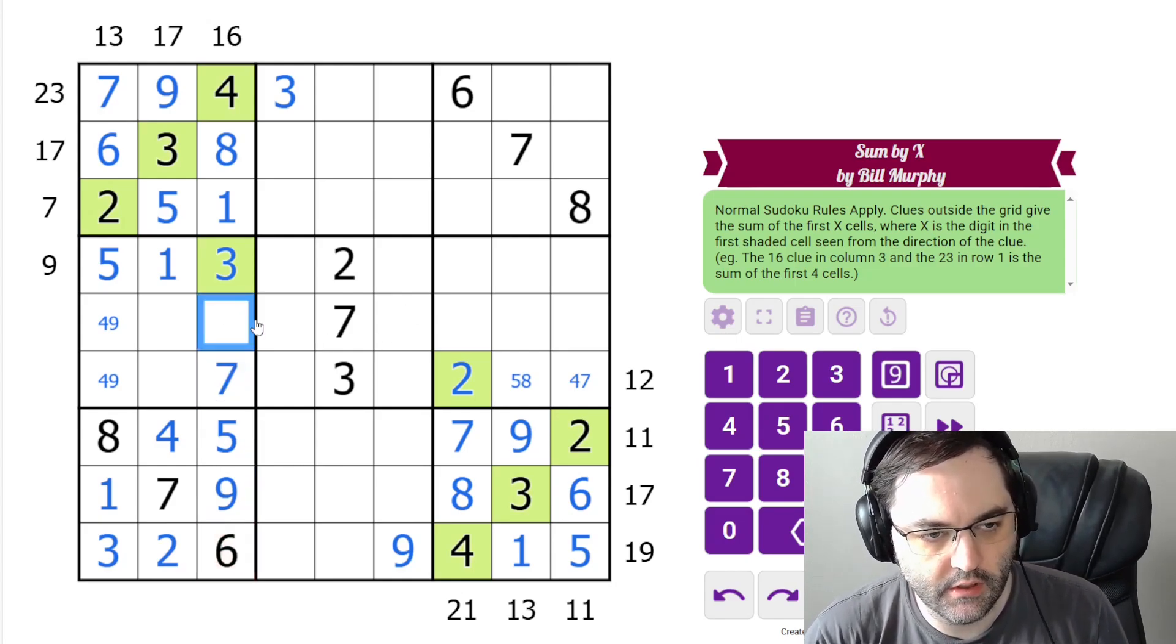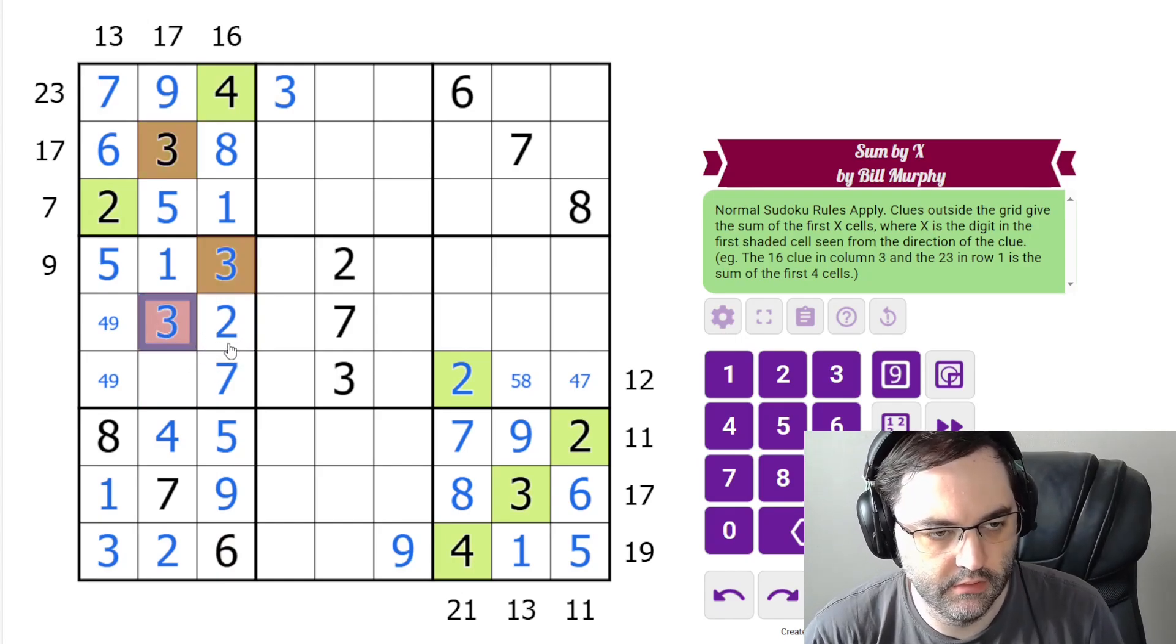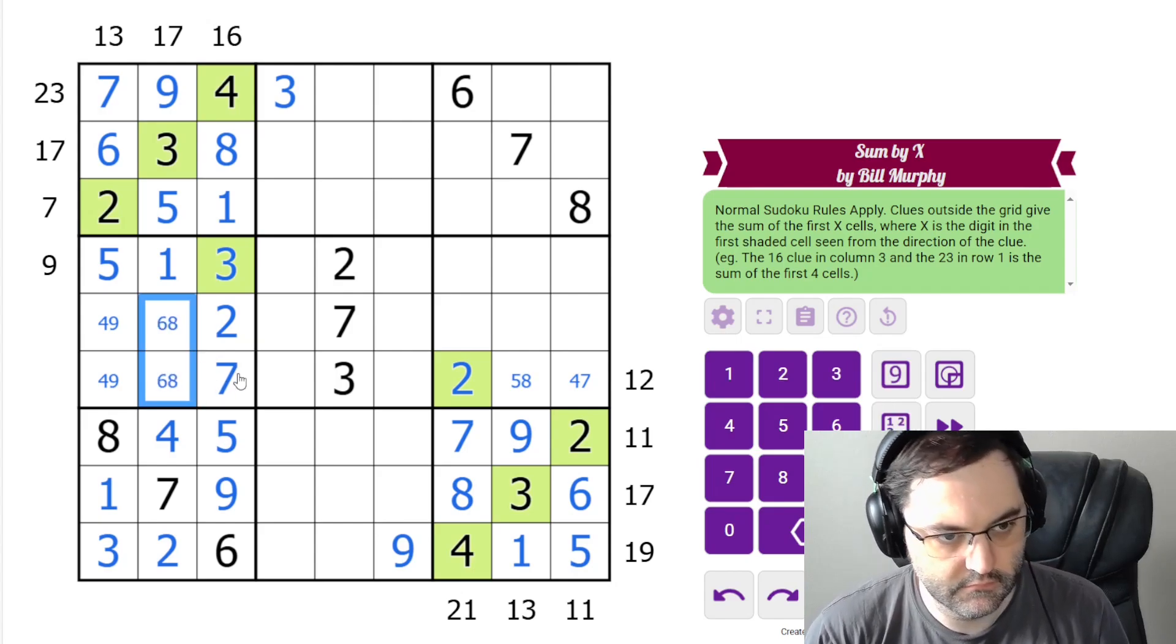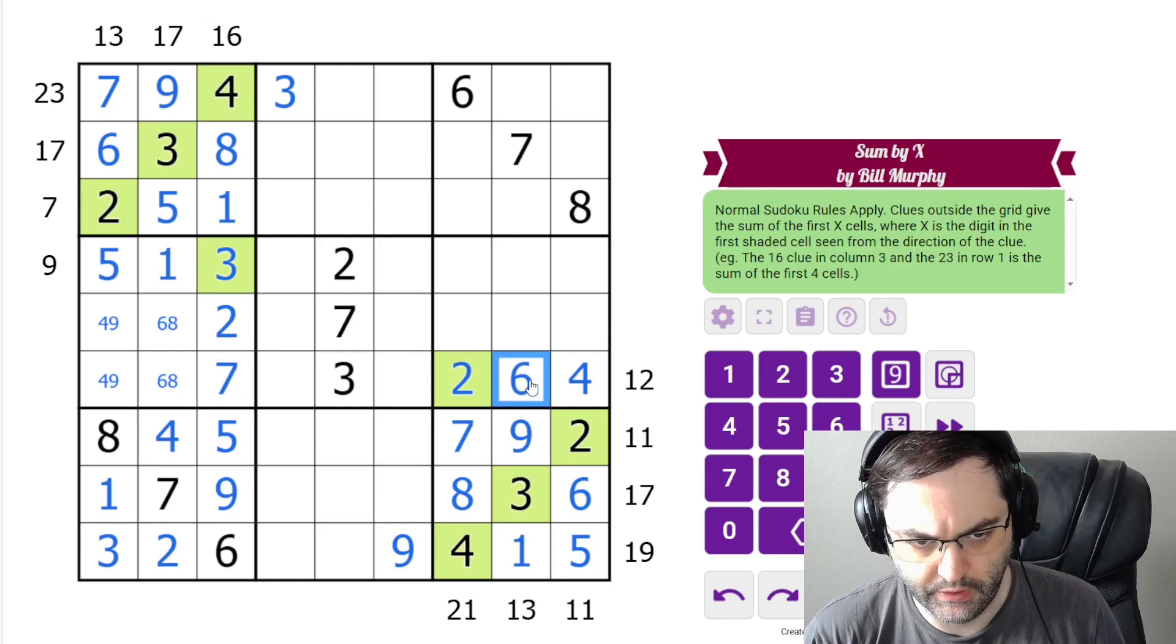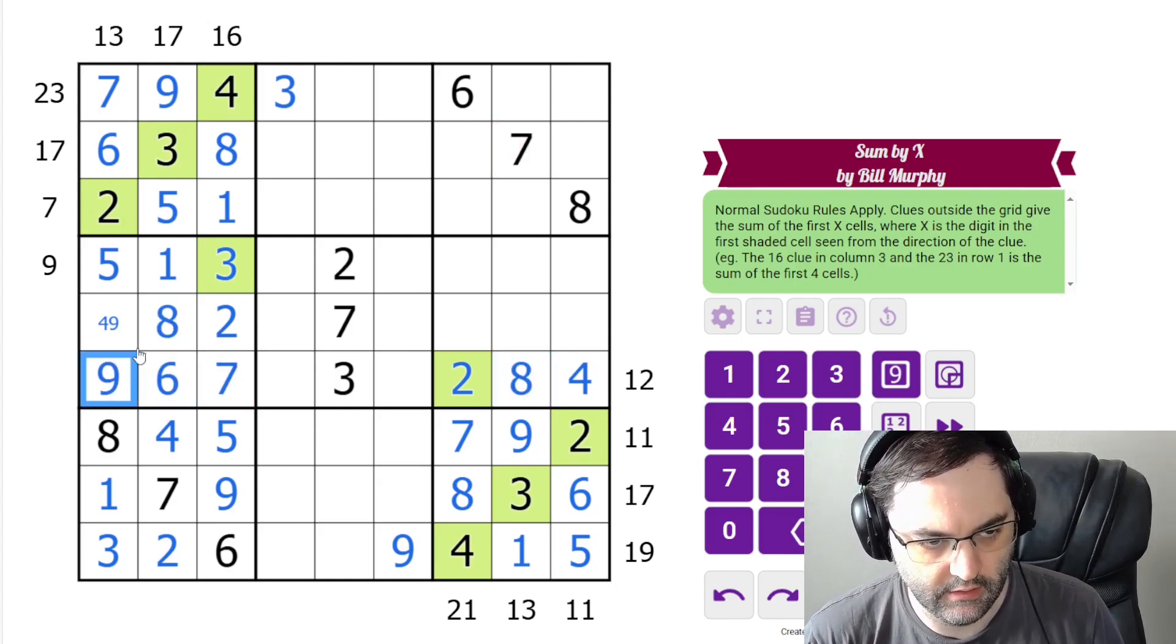We still need a 7 in the column, and a 2, and then not a 3. This is 6 and 8. The 7 resolves this clue. This must be 4, 8. And this is going to resolve our 6, 8, and our 9, 4.